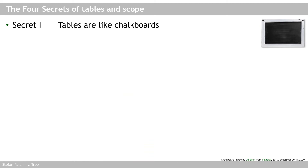Secret one: tables are like chalkboards. Look at the chalkboard on the right and imagine it to be a Z3 table. Each chalkboard or table has a name and columns of information written on it — these columns are the variables, which correspond to vectors of data. Notice the chalkboard is nailed fast to the top of the slide — imagine a chalkboard nailed to the wall right below the ceiling. Fix that image in your head.